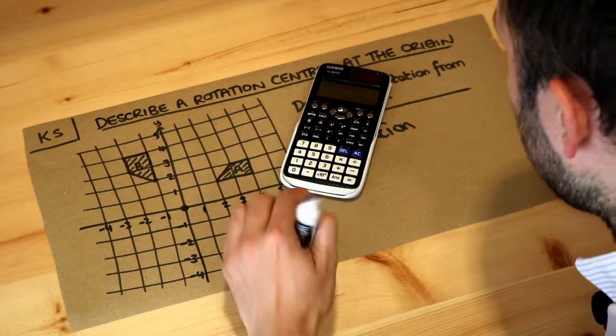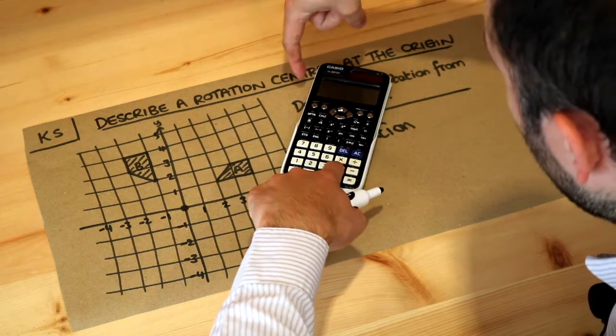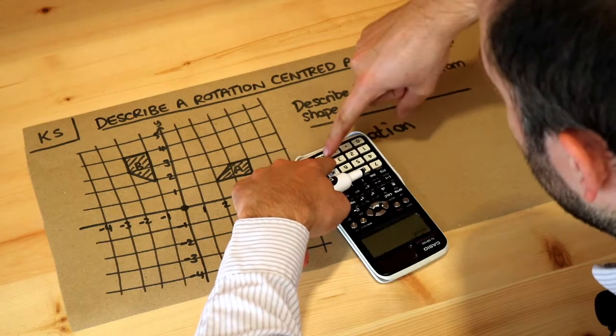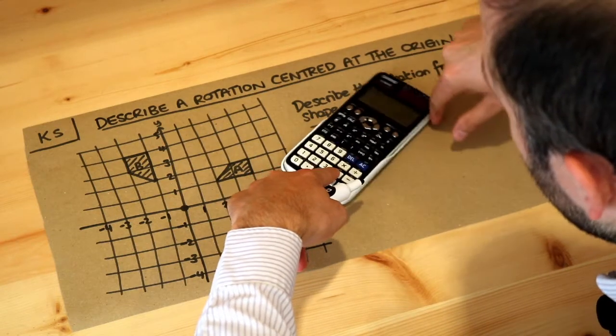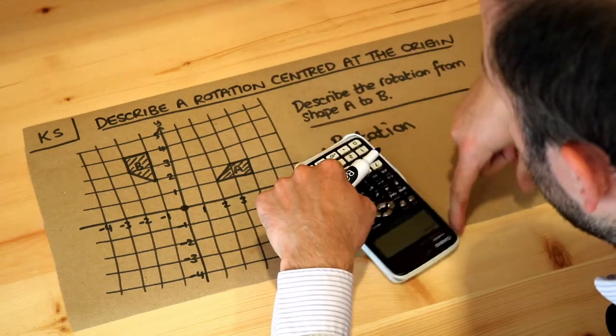For example, if I take this calculator and put my finger on this plus key and push it so the calculator spins around, this times key here would be the center of rotation because that's where the calculator is spinning about.